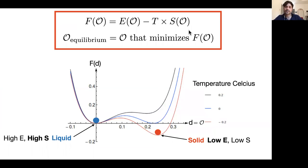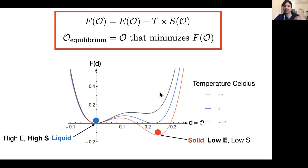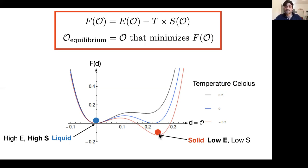Returning to the free energy plot: at high temperature above 0°C, the minimum — the equilibrium state — is the liquid state. At high temperature the entropy term dominates because it has a larger weight, and the liquid state has higher entropy than the solid. As I reduce the temperature, the energy term matters most and the solid state, having lower energy, becomes the equilibrium. This is how we read off experimentally which state the system will be found in.